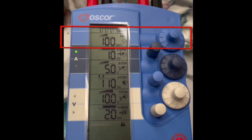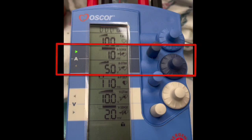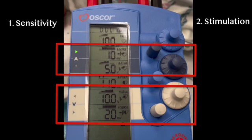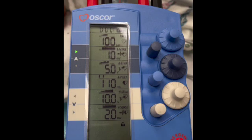Next up is the controls for the wires. Atrial on top, ventricular on the bottom. Both the atrial and ventricular wires have two things to set. The sense, which is how sensitive the pacemaker is seeing native heart activity, and the stimulation, which is how much energy the pacemaker is delivering when it paces. These will be covered in other videos.